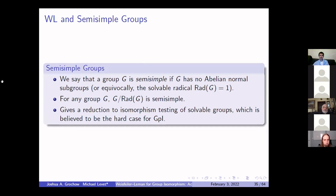For the remainder of the talk, I want to focus on semi-simple groups — those with no abelian normal subgroups. Semi-simple groups have a trivial solvable radical. For any group G, G modulo the radical is semi-simple, which pushes us toward thinking about solvable groups, believed to be the hard case for group isomorphism. If we can deal with the semi-simple quotient, what remains is to figure out how to glue back together to get G. To even put semi-simple groups into P took a series of two papers.